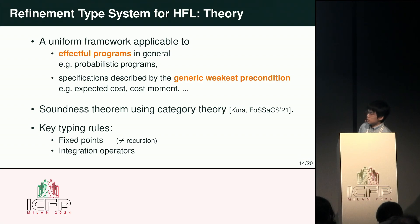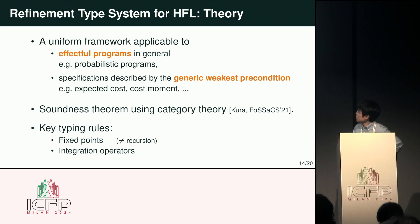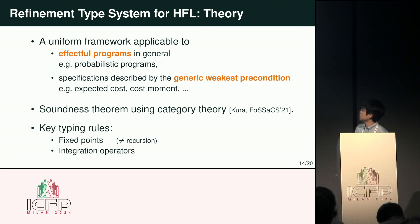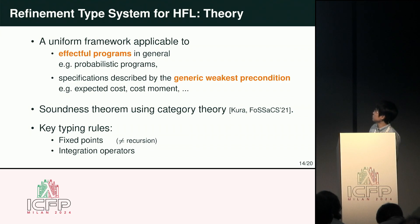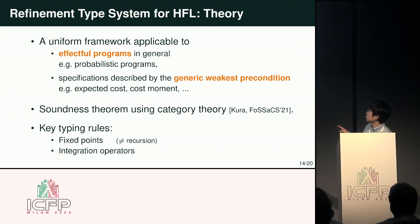In this work we focused on automated verification of probabilistic programs, but in theory our framework is more general because it can verify effectful programs in general. As a specification, we can verify properties described by the generic weakest precondition, which includes several properties of probabilistic programs. This generality is achieved using category theory, and the soundness of our refinement type system is also proved using category theory. In the design of our refinement type system, the key point is how to reason about fixed-point and integration operators in our generalized HFL.